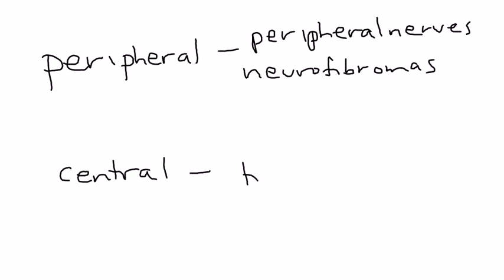Central tumors involve the central nervous system, which is the brain and spinal cord. Let's discuss the different types of tumors, starting with peripheral tumors called neurofibromas.